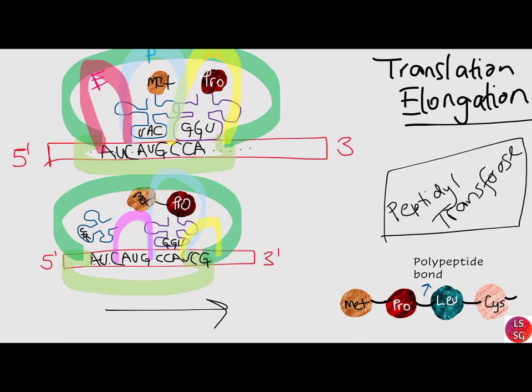Methionine forms the N-terminus of the polypeptide and the new amino acid — in this case proline — forms the C-terminus. Once the peptide bond is formed, the messenger RNA molecule is pulled through the ribosome by three nucleotides, or exactly one codon. This movement allows the empty transfer RNA to be released from the complex through the exit site, and allows the A-site to be emptied for the new transfer RNA that carries the appropriate amino acid for the next codon. This process continues, forming a long polypeptide chain.